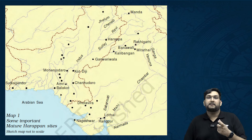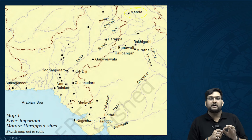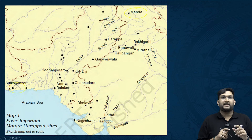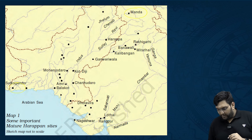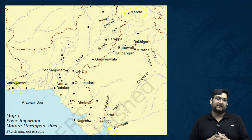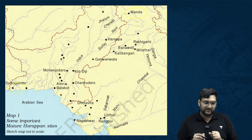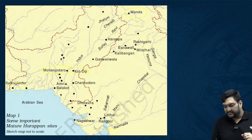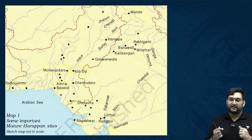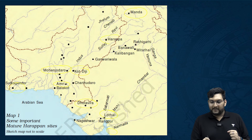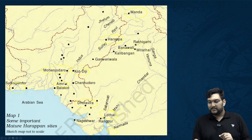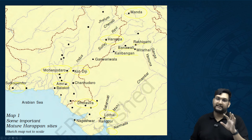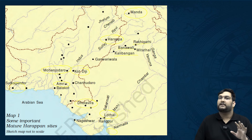The next important thing in the NCERT is the map, showing all major sites: the northernmost is Manda, westernmost is Surkagendor, easternmost is near Rakhigarhi or Alamgirpur, and the southernmost is Daimabad near the Narmada river. Standard sites include Mohenjo-daro, Kodizi, Amri, Dholavira — the only UNESCO-related site — Lothal with its dockyard, Harappa, Banavali, Kalibangan, and Rakhigarhi, where a lot of research is currently happening.